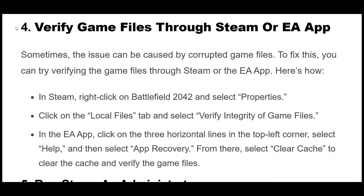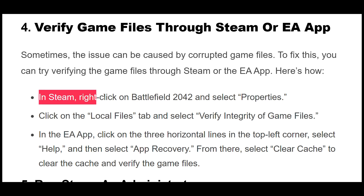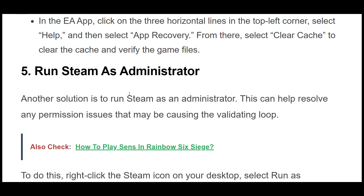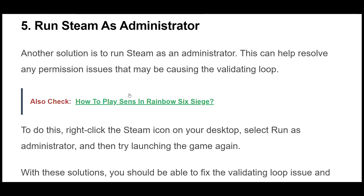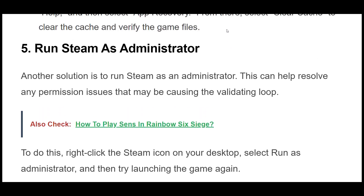Solution 4: Sometimes the issue can be caused by corrupted game files. To fix this, you can try verifying the game files through Steam or the EA app. In Steam, right-click on Battlefield 2042 and select Properties. Click on the Local Files tab and select Verify Integrity of Game Files. In the EA app, click on the three horizontal lines in the top left corner, select Help, and then select App Recovery. From there, select Clear Cache to clear the cache and verify the game files.